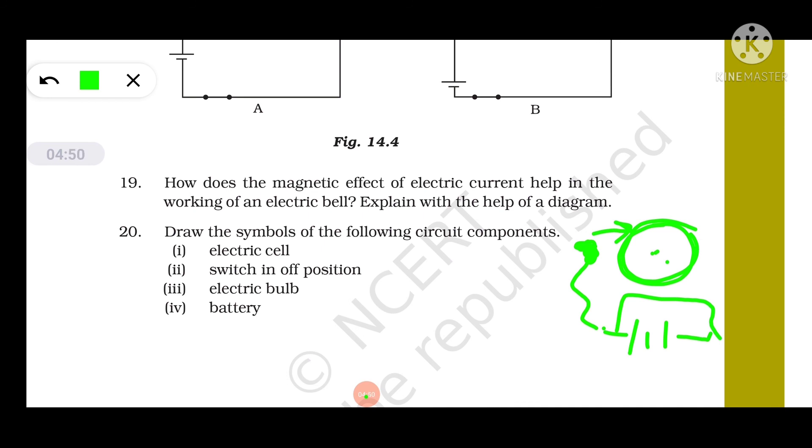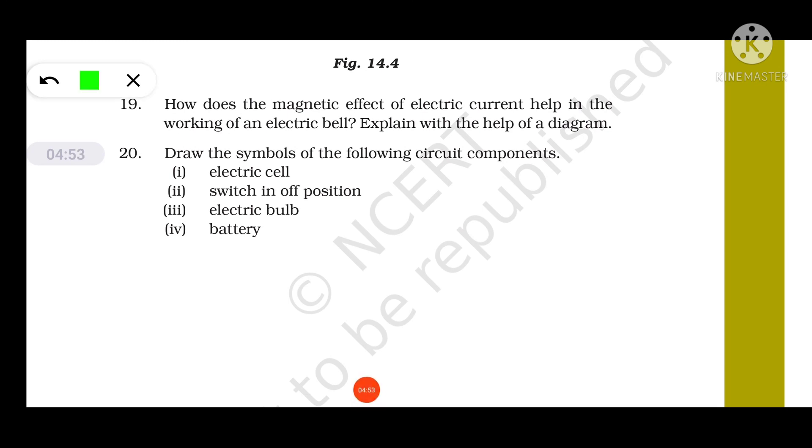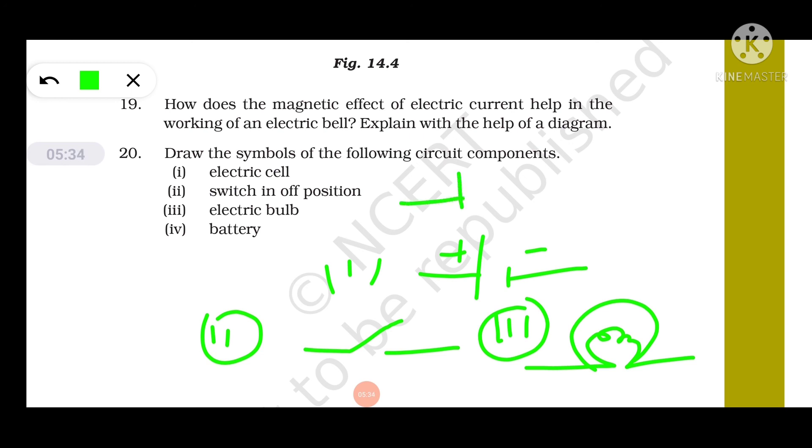Question number 20: Draw the symbols of the following circuit components. For electric cell, we use like this: the large line stands for positive terminal and small line stands for negative terminal. The next one is switch in off position. When the switch is in off position, then the circuit will be open like this. Electric bulb: you can easily draw like this. This is your electric bulb. And the fourth one is battery. Battery is the combination of cells like this. This is another cell like this. You can make the battery.